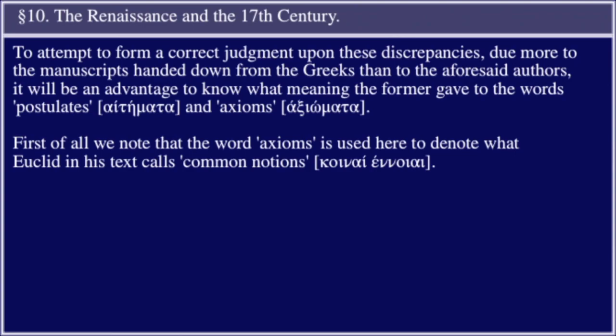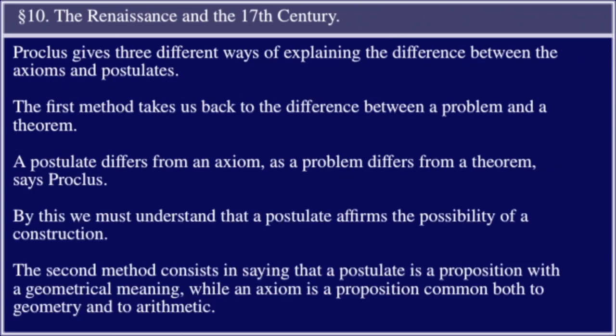Proclus gives three different ways of explaining the difference between axioms and postulates. The first method takes us back to the difference between a problem and a theorem: a postulate differs from an axiom as a problem differs from a theorem, says Proclus. By this we must understand that a postulate affirms the possibility of a construction. The second method consists in saying that a postulate is a proposition with a geometrical meaning,